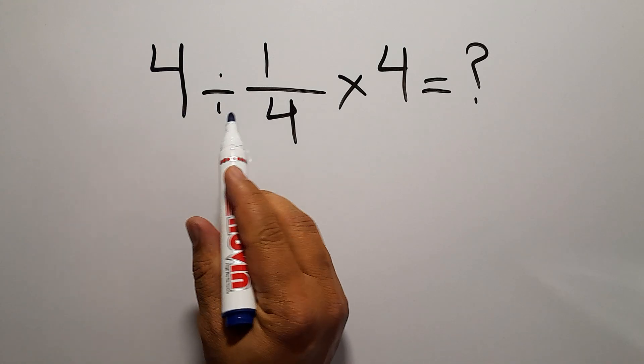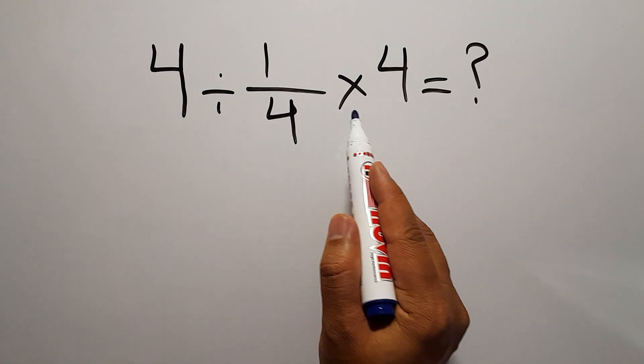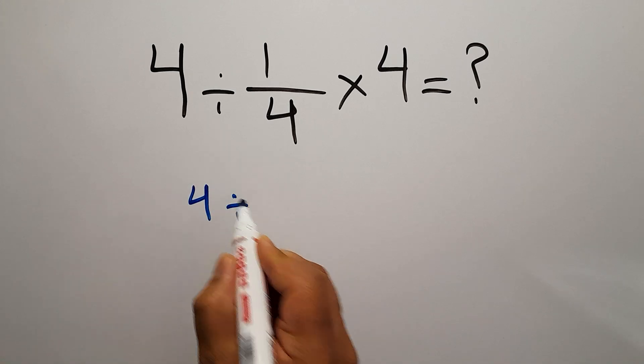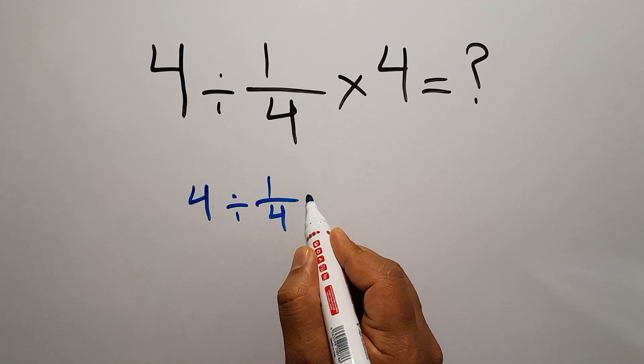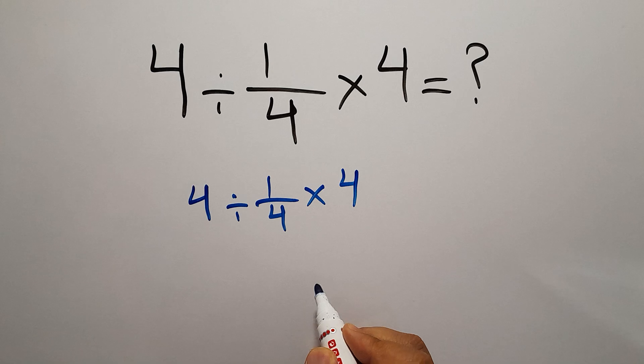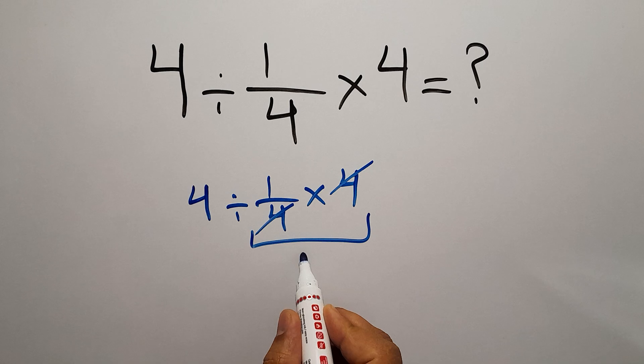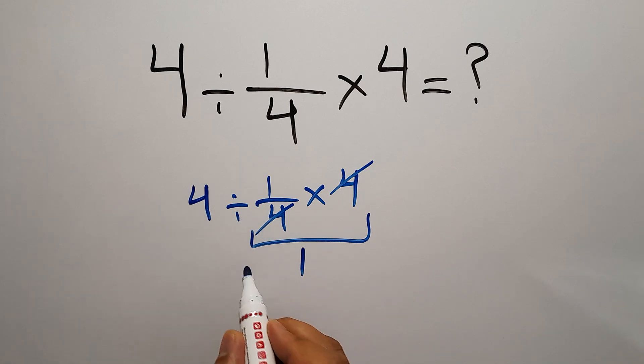4 divided by 1 over 4 then times 4. Okay, we have 4 divided by 1 over 4 then times 4. We can easily cancel this 4 and this 4, and here we have just 1, so 4 divided by 1...